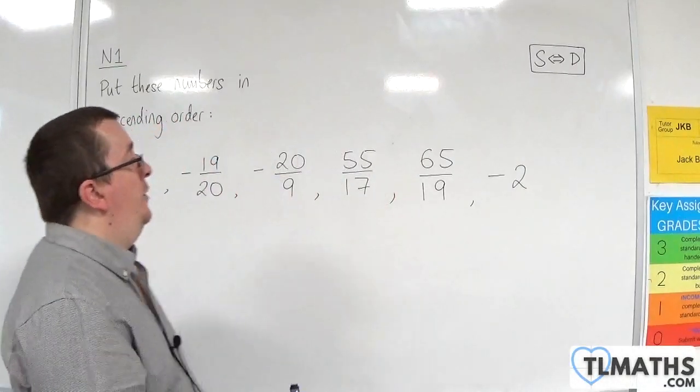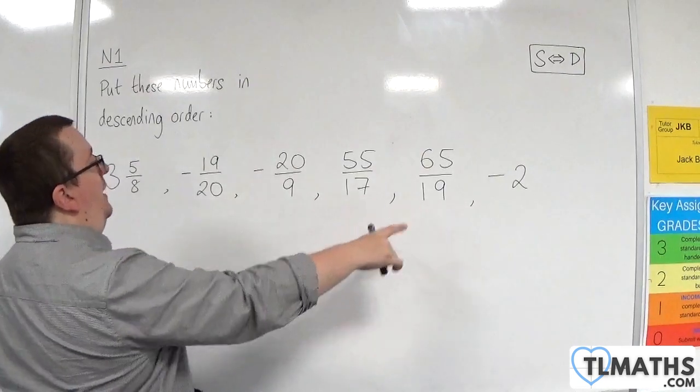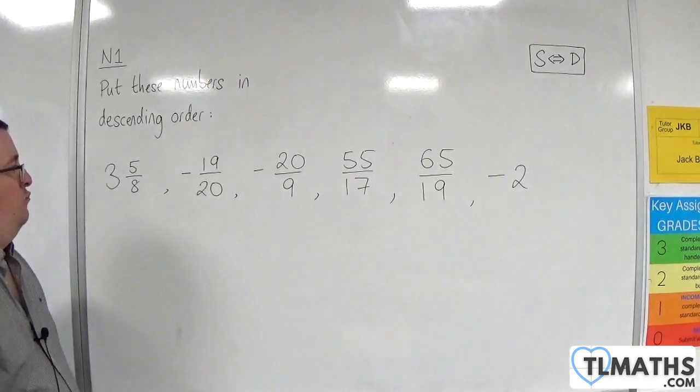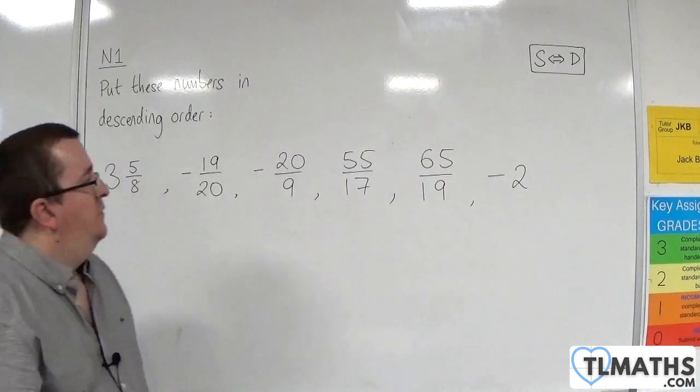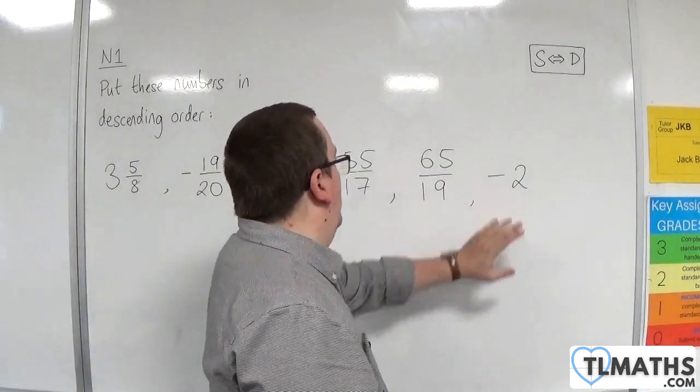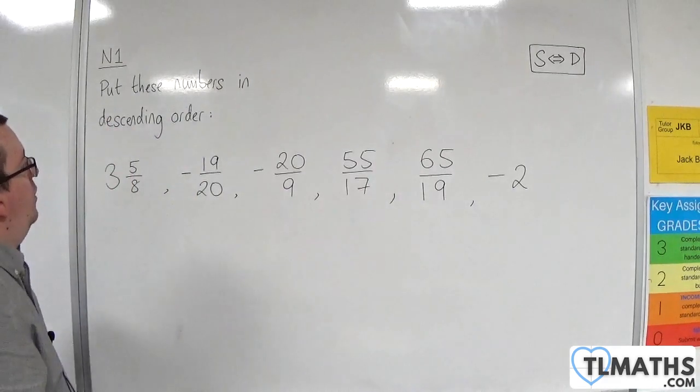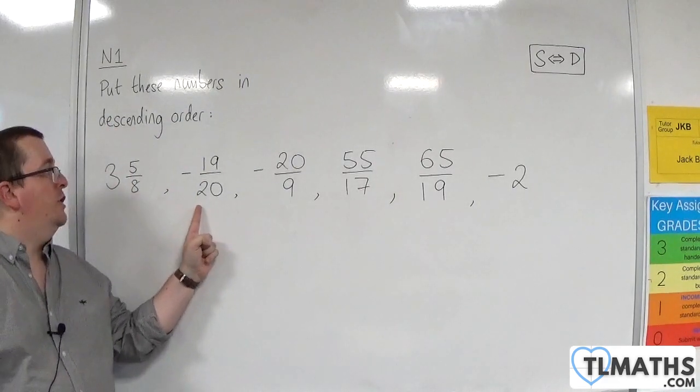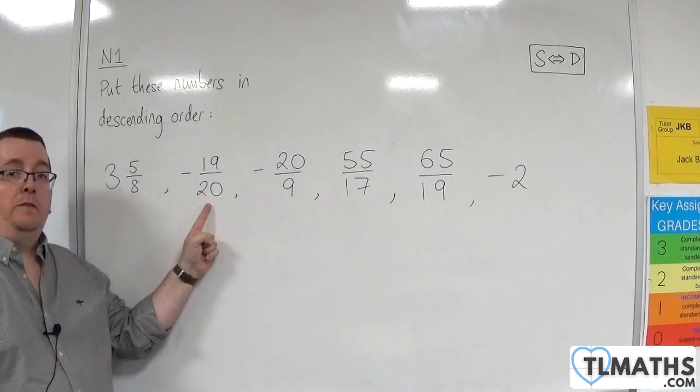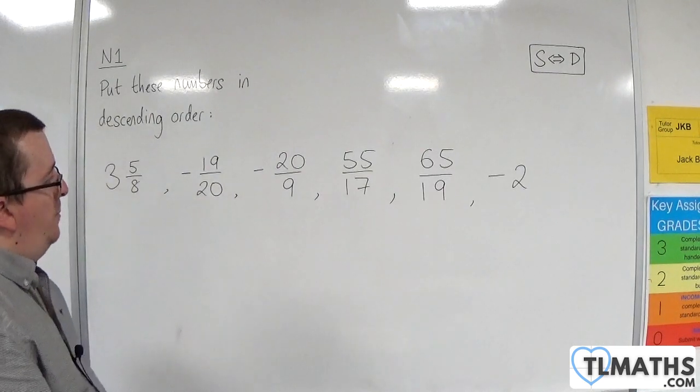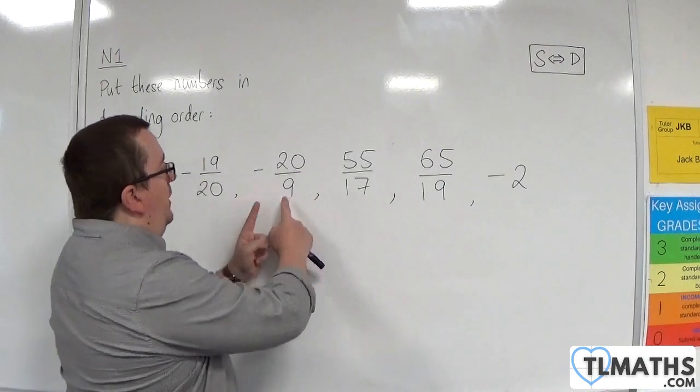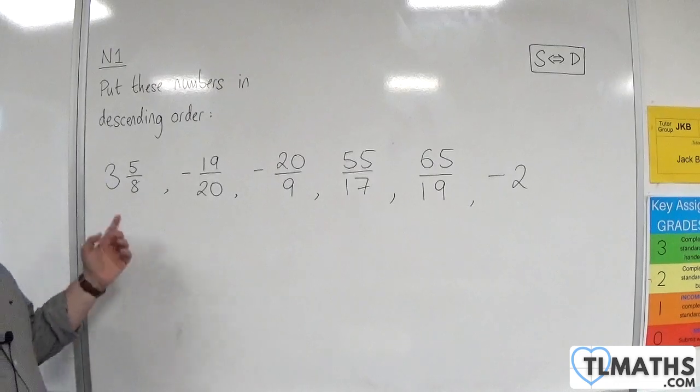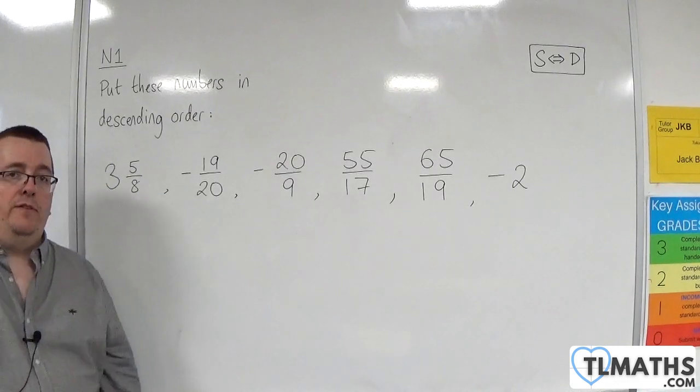So in this video what I want to do is put these numbers into descending order and here we've got a right mix. So I've got an integer over here, minus 2. I've got an example here of a proper fraction, minus 19 over 20. I've got examples of improper fractions or top heavy fractions here, so all three of those. And I've also got a mixed number, 3 and 5 eighths.